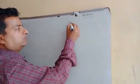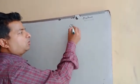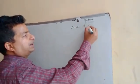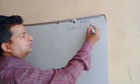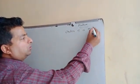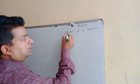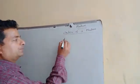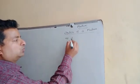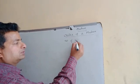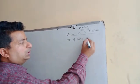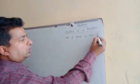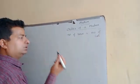First, we discuss what is the order of a matrix. The order of a matrix is the number of rows into the number of columns.